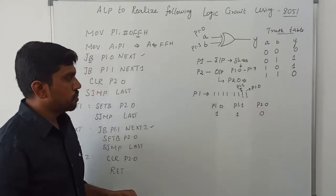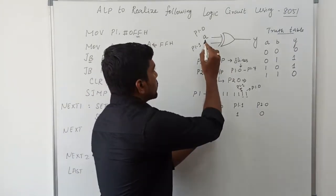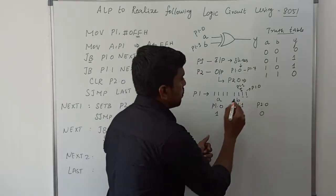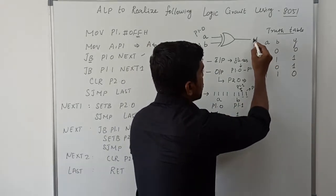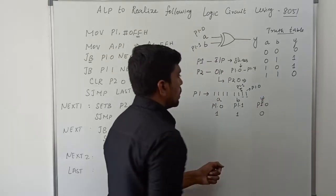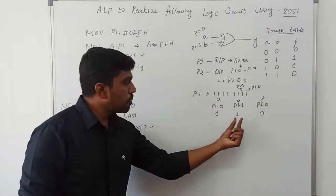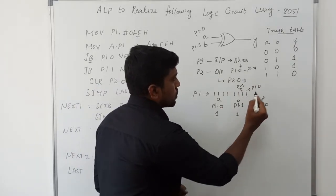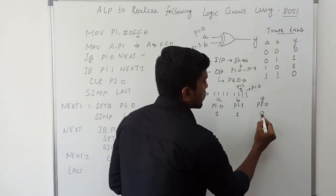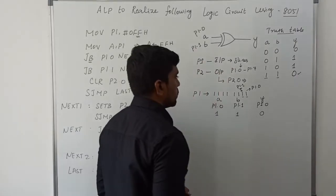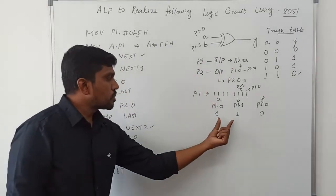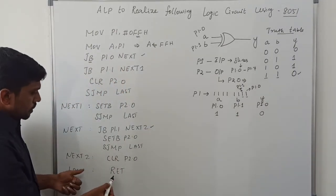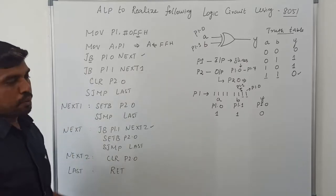At label NEXT2, the instruction CLR P2.0 clears the output, setting P2.0 to 0. Here P1.0 is input A, P1.1 is input B, and P2.0 is the output Y. When both A and B are high (1-1), the corresponding XOR output is 0. Then SJMP LOOP returns to the beginning.